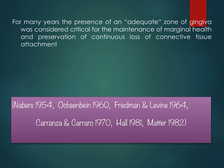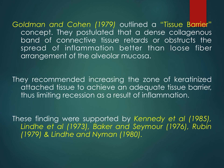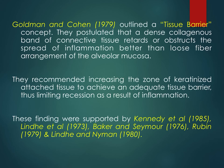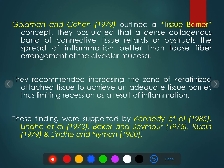For many years, the presence of an adequate zone of gingiva was considered critical for maintenance of marginal health and prevention of continuous loss of connective tissue attachment. Cohen and Goldman in the Atlas postulated the tissue barrier concept — that the dense collagenous band of connective tissue retards or obstructs the spread of inflammation better than loose fibers. They recommended increasing the zone of keratinized attached tissue to achieve an adequate tissue barrier, thus limiting recession as a result of inflammation.